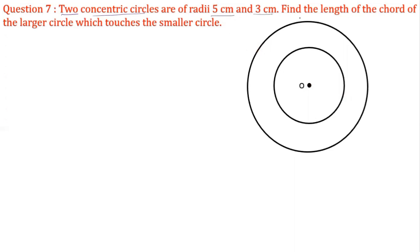The radii of the circles are 5 cm and 3 cm. Now we have to find the length of the chord of the larger circle which touches the smaller circle. We have to draw a chord to the larger circle such that it touches the smaller circle — meaning the chord of the larger circle is a tangent to the smaller circle.